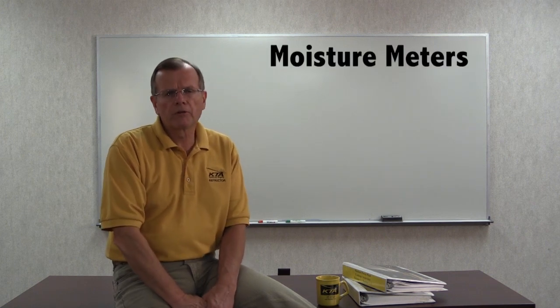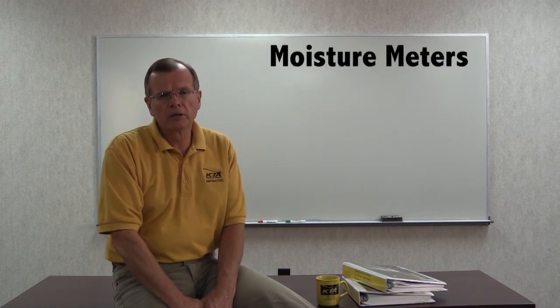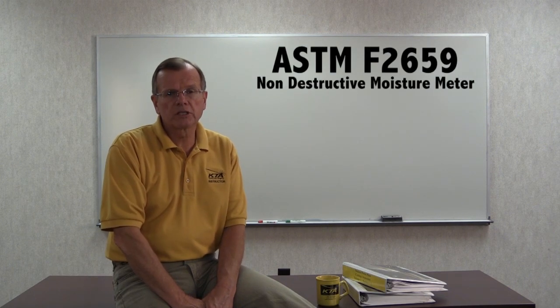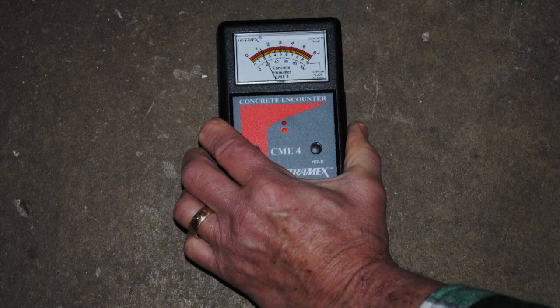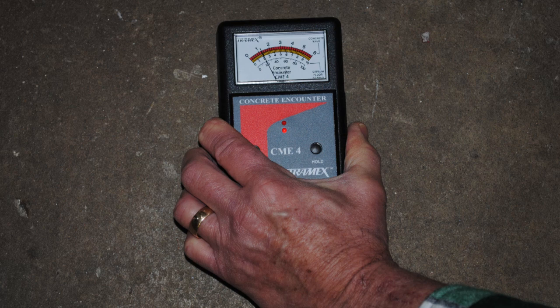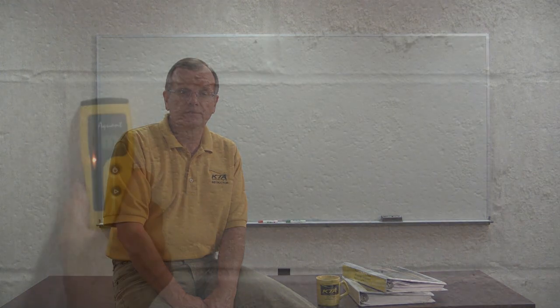Moisture meters. There are a number of them. One is electrical impedance. The use of this meter is addressed in ASTM F-2659. This is a non-destructive comparative test involving the use of an electronic moisture meter. It is used to measure the electrical impedance of the floor beneath the instrument. This method provides a quick way to obtain an approximation of the relative moisture content of the concrete.